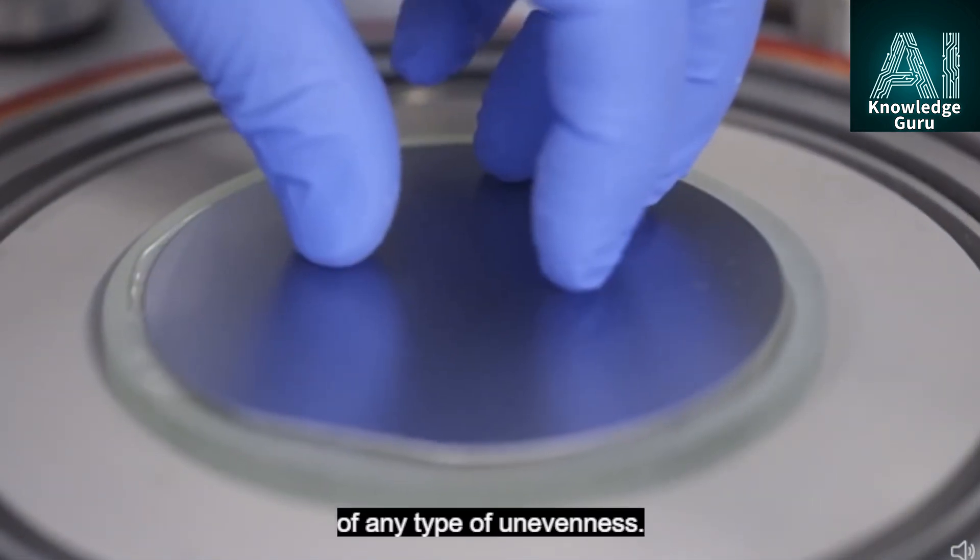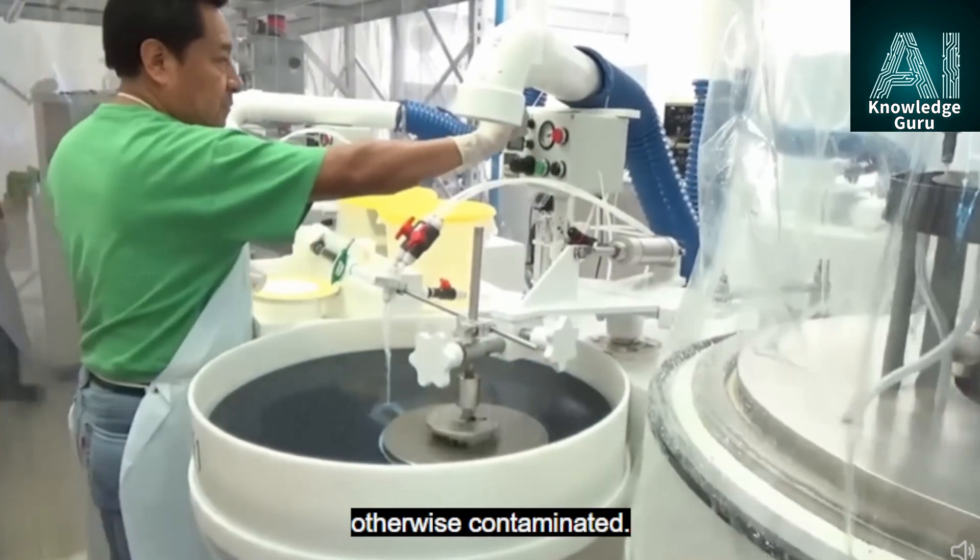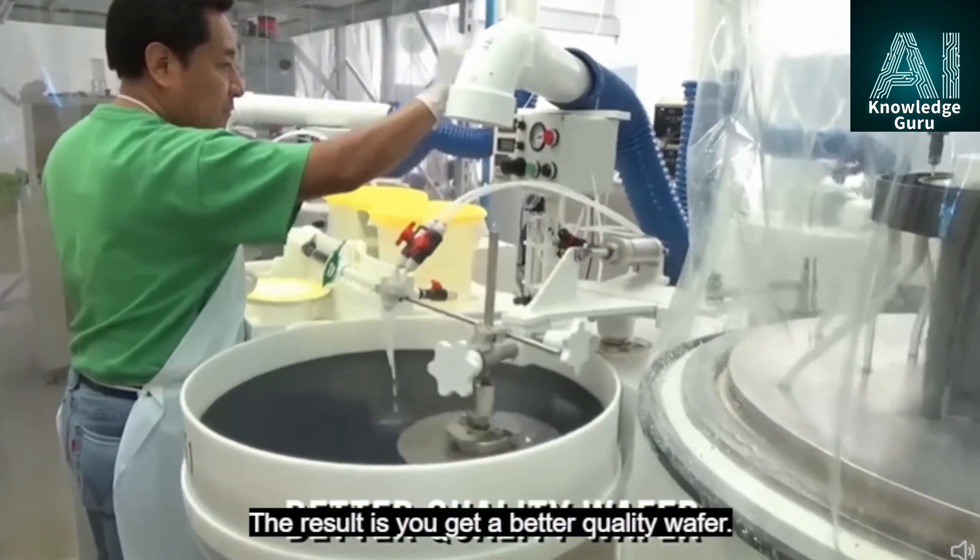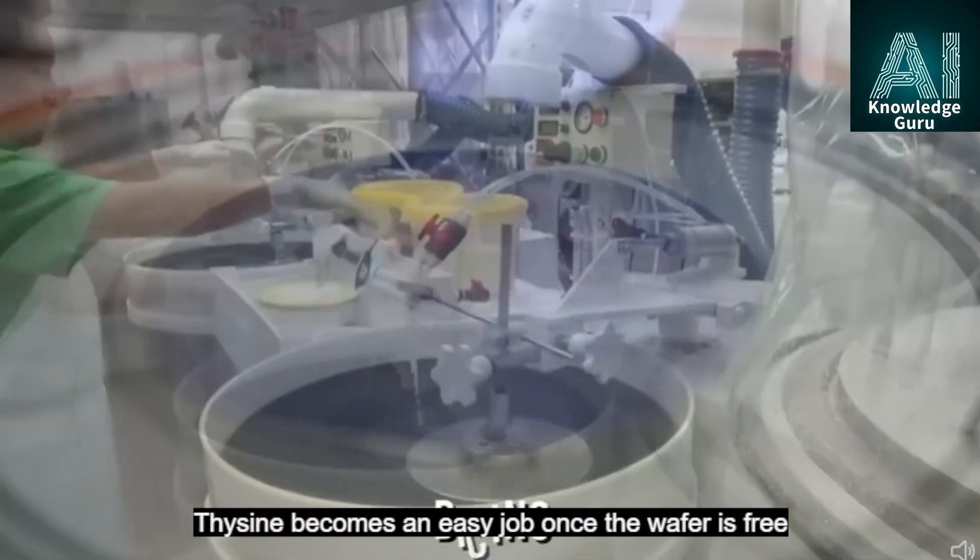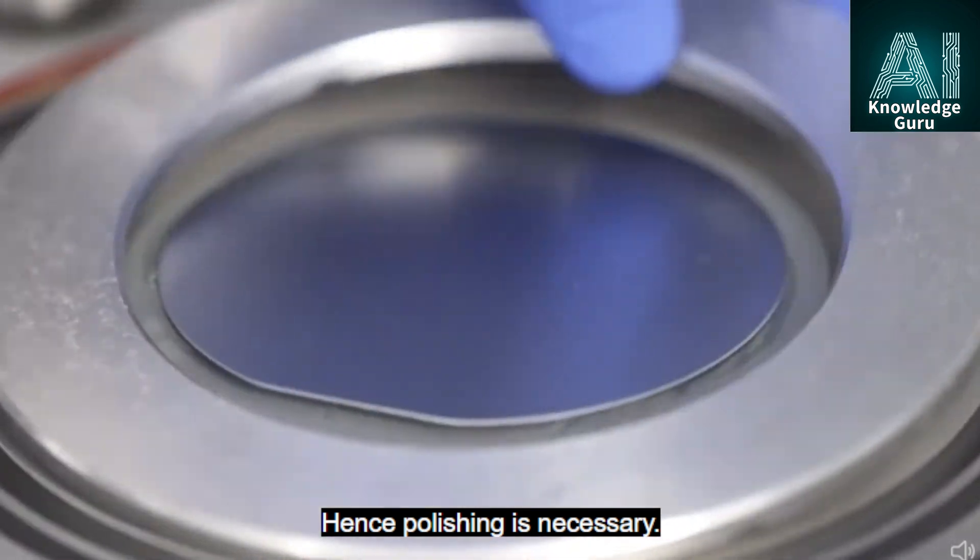Polishing also makes the wafers free of unwanted particles that otherwise contaminate it. The result is you get a better quality wafer. Etching becomes an easy job once the wafer is free of all uneven subsurfaces, hence polishing is necessary.